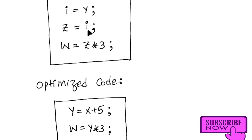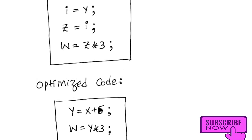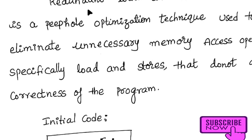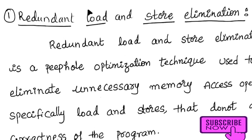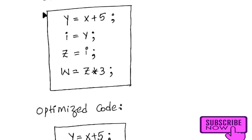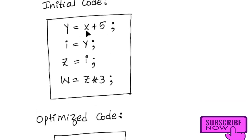Instead of writing i = y and z = i separately, we can directly write w = y * 3, eliminating the unnecessary intermediate variables. So the optimized code becomes: y = x + 5, w = y * 3. The redundant stores of y into i and i into z are eliminated, since the value of i is just y. This is called redundant load and store elimination.